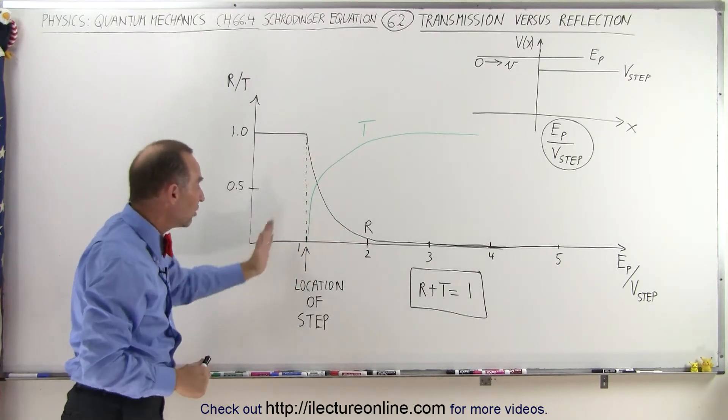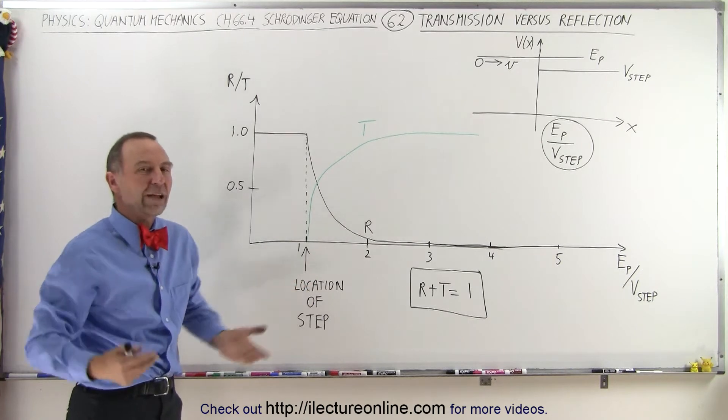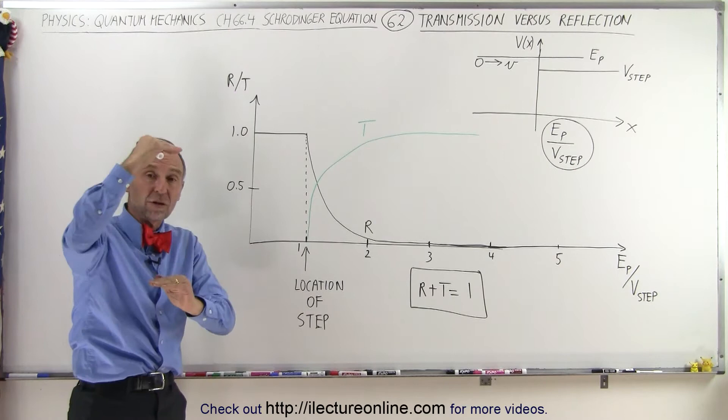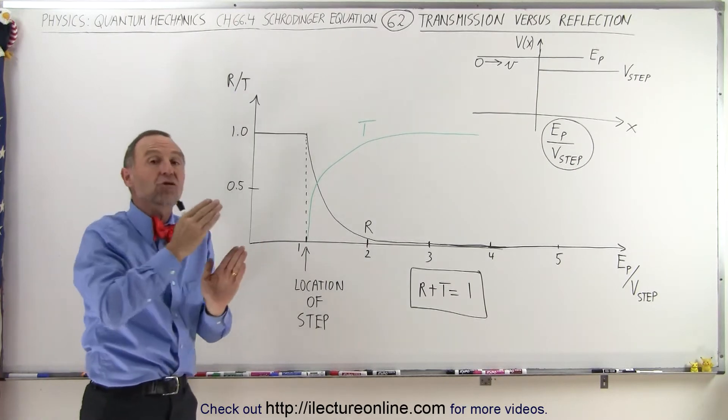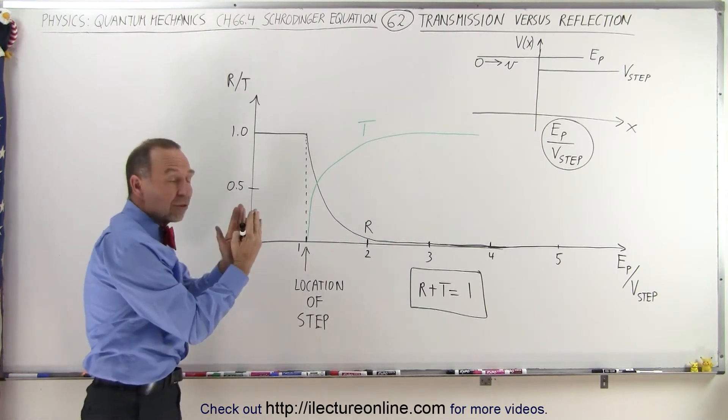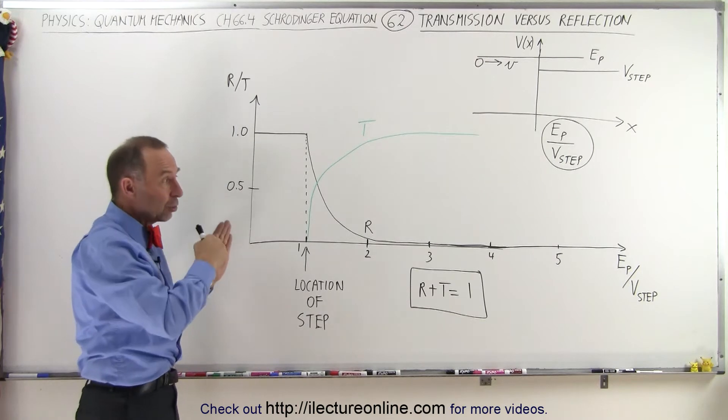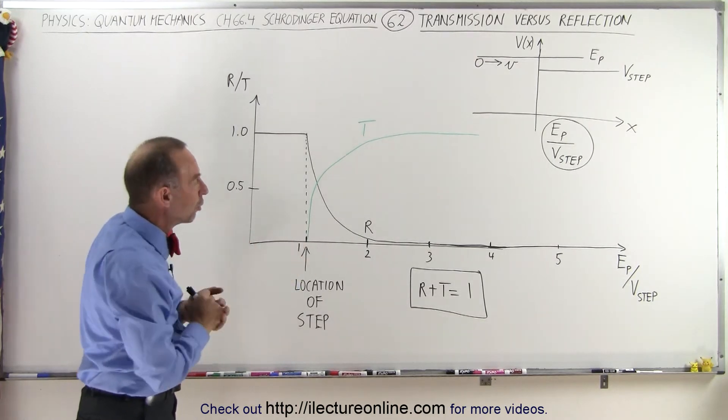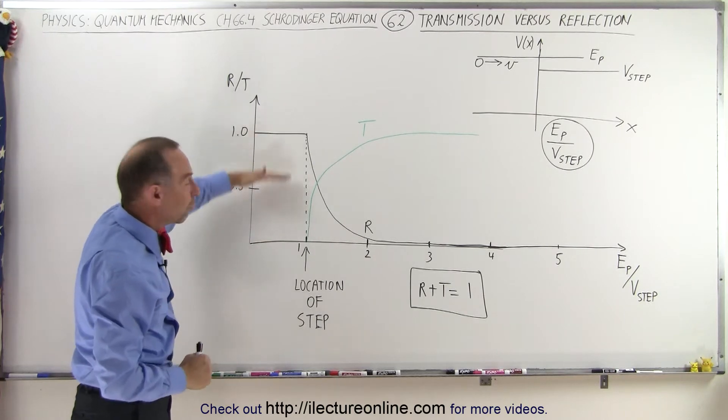But then since we haven't reached the barrier yet, we don't have to worry about that. As we will see later, in cases where the energy is less than the potential of the barrier, some penetration will still exist. And if the barrier is thin enough, it could potentially present a tunneling situation where the particle will actually tunnel through the barrier, which of course we don't have represented here.